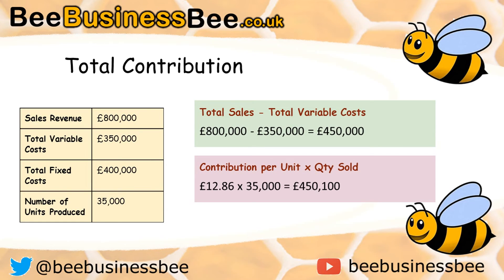We can then calculate total contribution using the simplest formula: sales revenue of £800,000 minus total variable cost of £350,000 gives £450,000. You'll notice the two answers don't match exactly — that's to show how rounding inaccuracies can cause a problem. Taking £12.86 multiplied by 35,000 units gives £450,100, showing the difference rounding makes. The exam board would have to allow both answers. In the exam they'd always pick nice numbers so that would never happen, but you can see in real life how figures can vary.